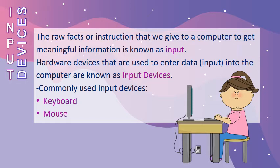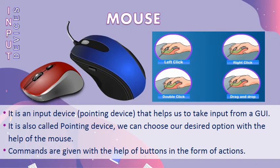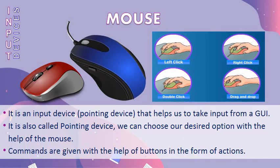But how do we feed these inputs? There are special types of hardware devices or computer parts to feed the input. These devices are known as input devices. The most commonly used input devices are keyboard and mouse. Mouse is one of the most commonly used input devices. It is also called a pointing device as it has an arrow or pointer to point things in the computer.